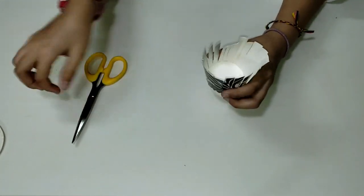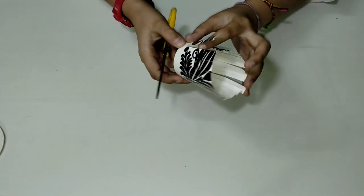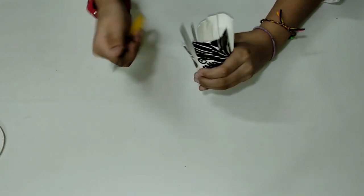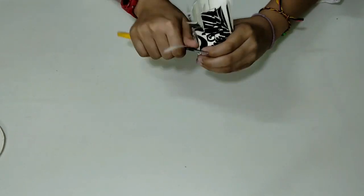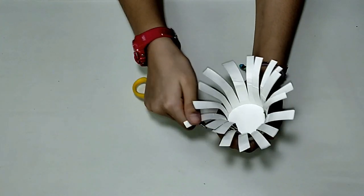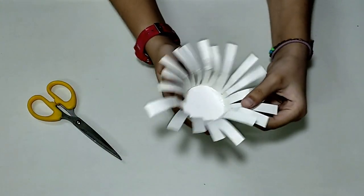For the next step we'll use these scissors only and we'll start curving each and every strip like this. Now we are done with the folding.